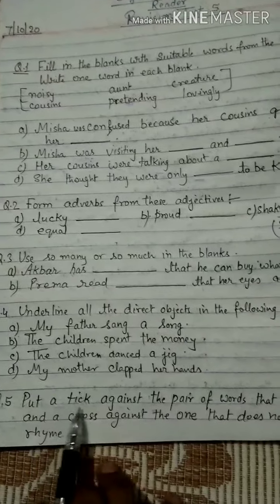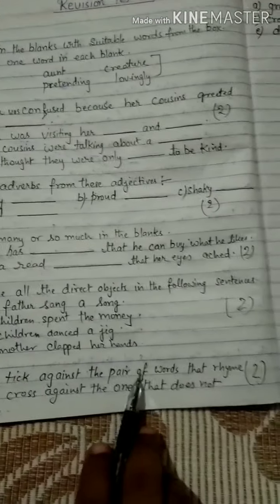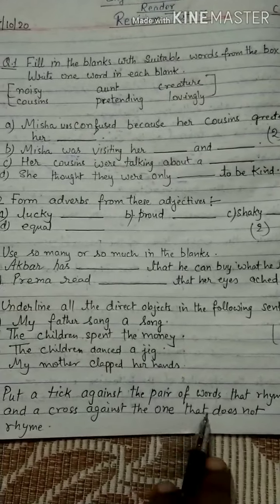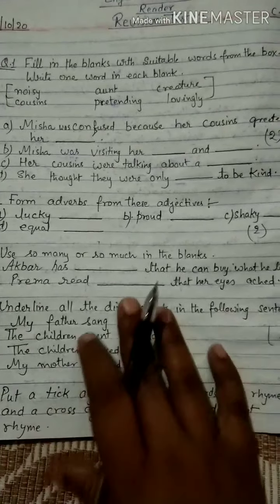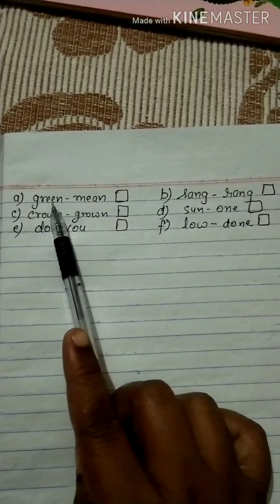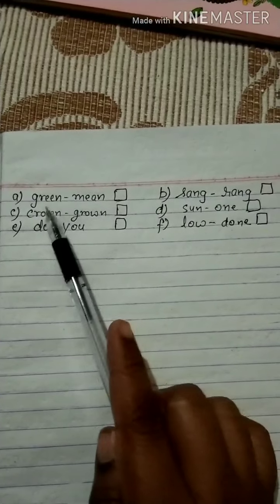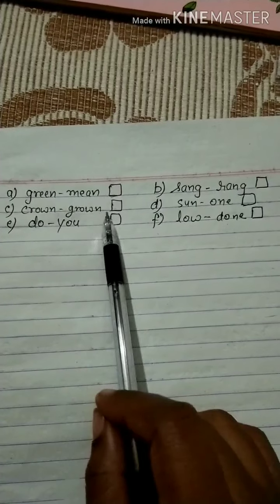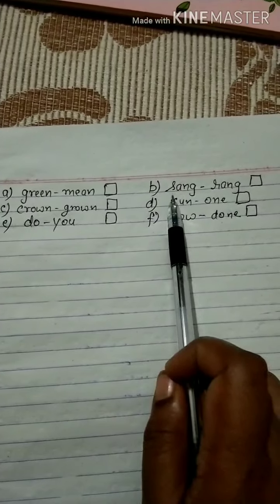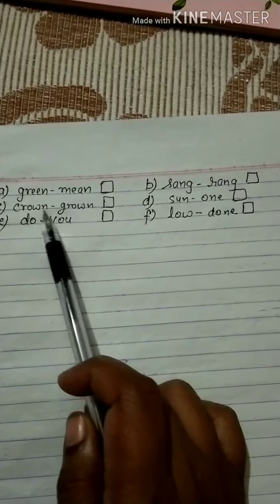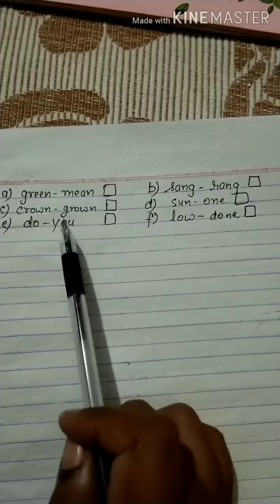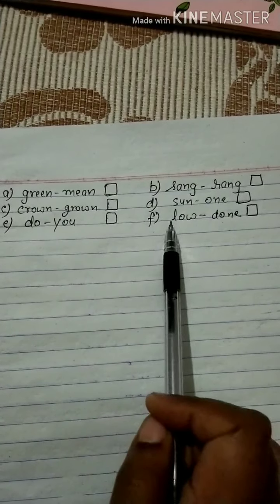Question number 5: Put a tick against the pair of words that rhyme, and a cross against the one that does not rhyme. The word pairs are: green/mean, sang/rang, crone/groan, son/won, do/you, and lo/done.